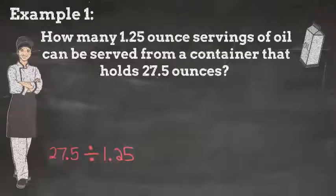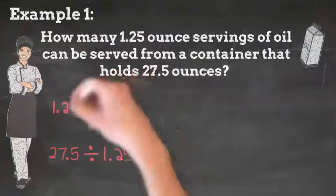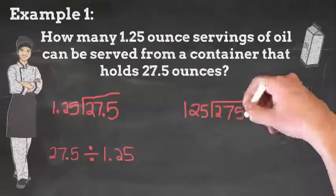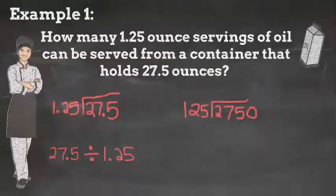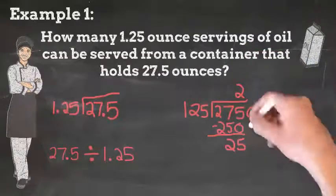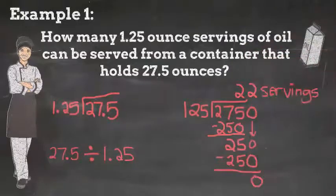Next, we want to calculate. To calculate 27.5 divided by 1.25, I want to eliminate the decimal from 1.25. To do that, I can multiply it by 100. And if I multiply that by 100, I have to multiply 27.5 times 100. My new expression is 2,750 divided by 125. Now, when I calculate that, that gives us 22 servings.